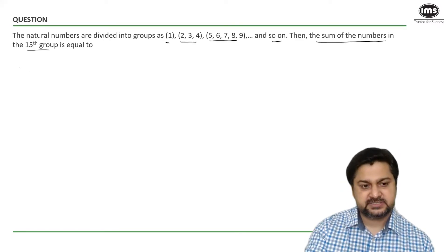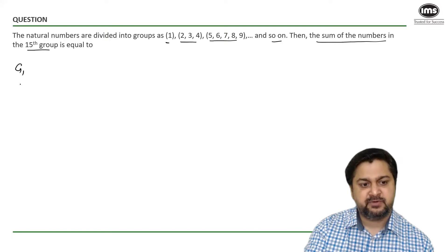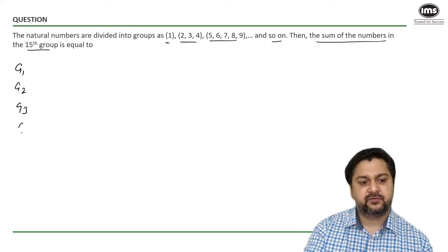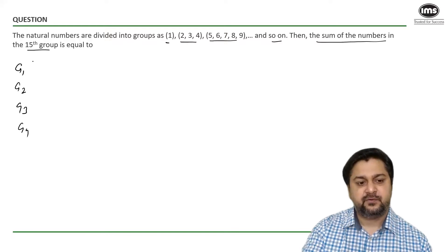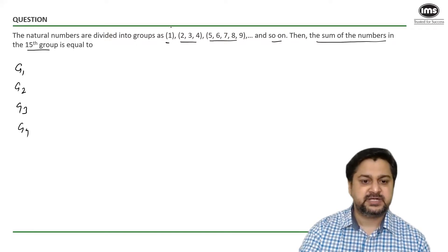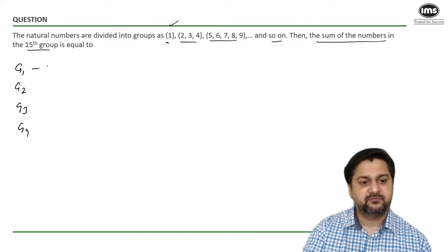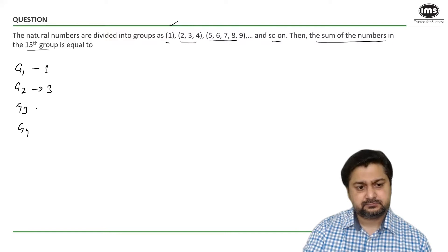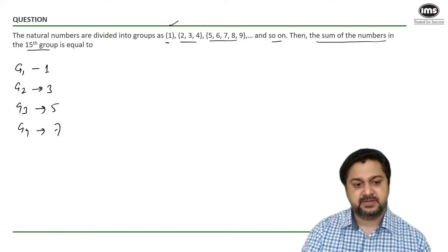So the pattern goes like this. If I name the groups as group number 1, group number 2, group number 3, 4 and so on, and if I focus on the number of elements: group number 1 has one element, group number 2 has 3 elements, group number 3 has 5 elements, group number 4 has 7 elements.